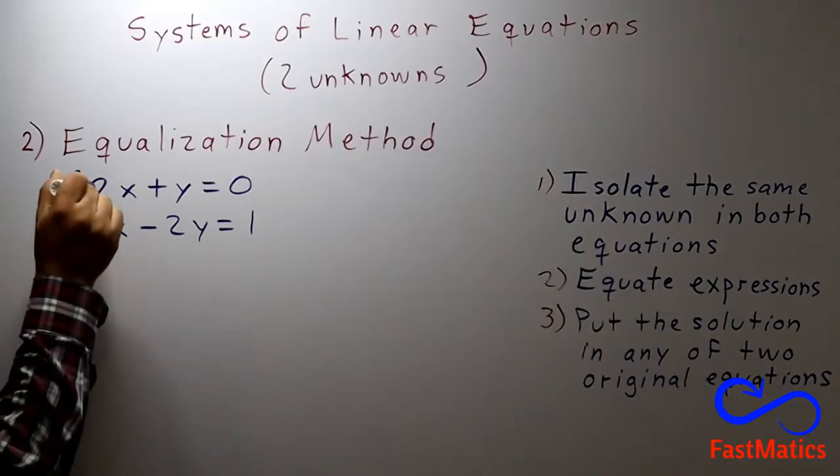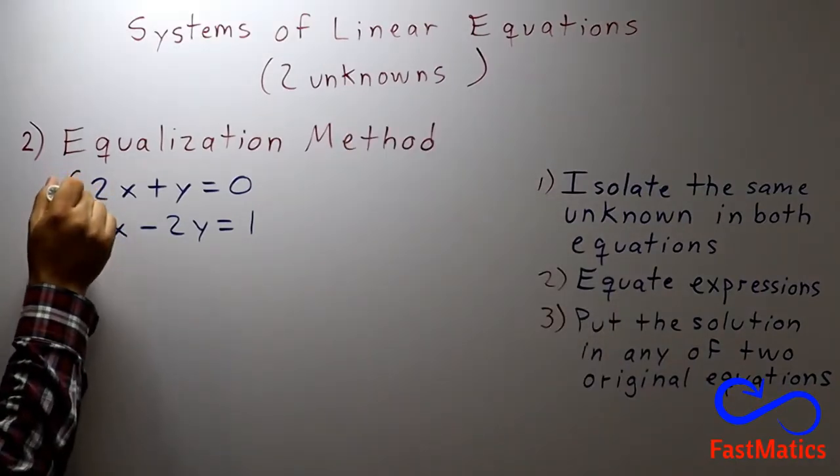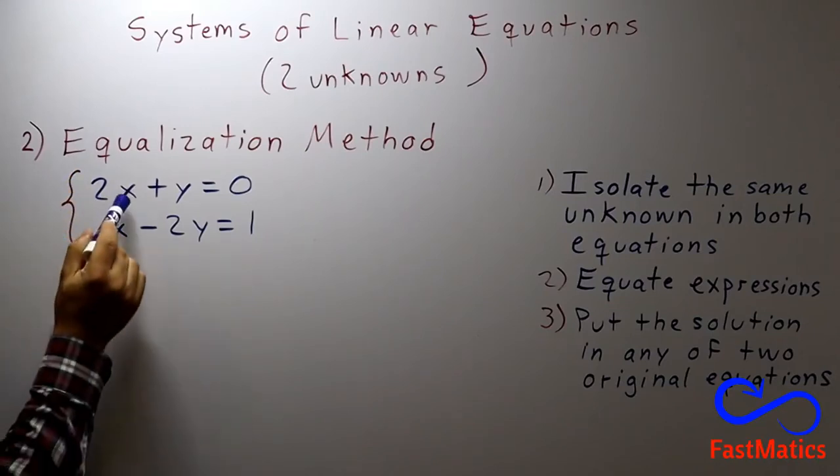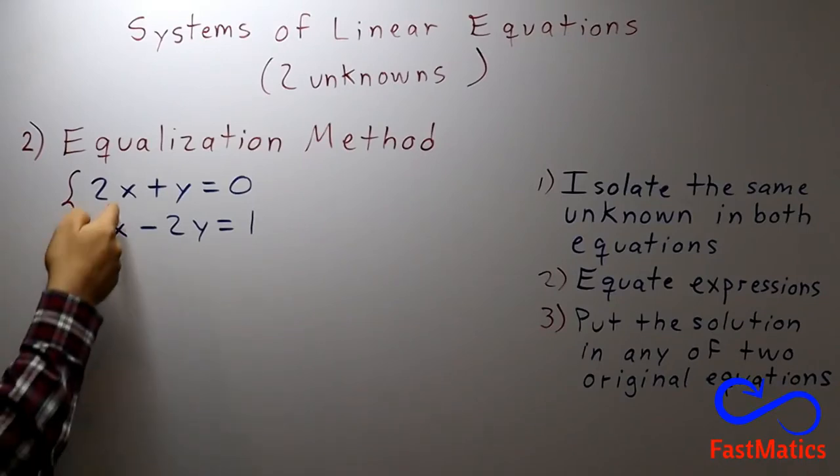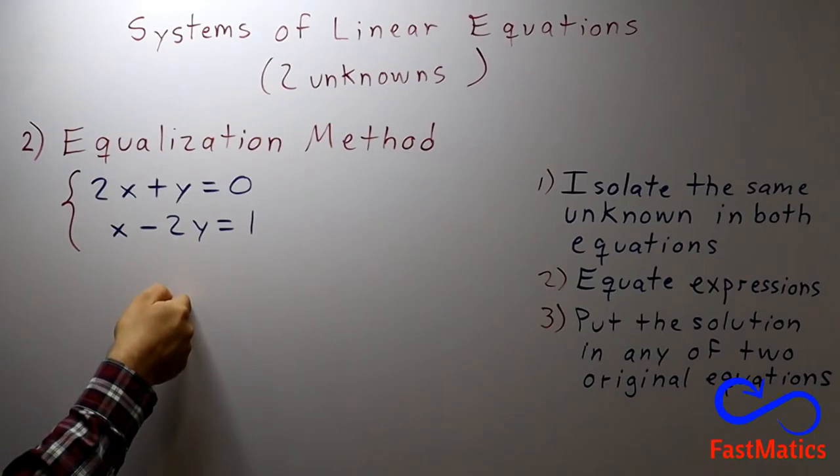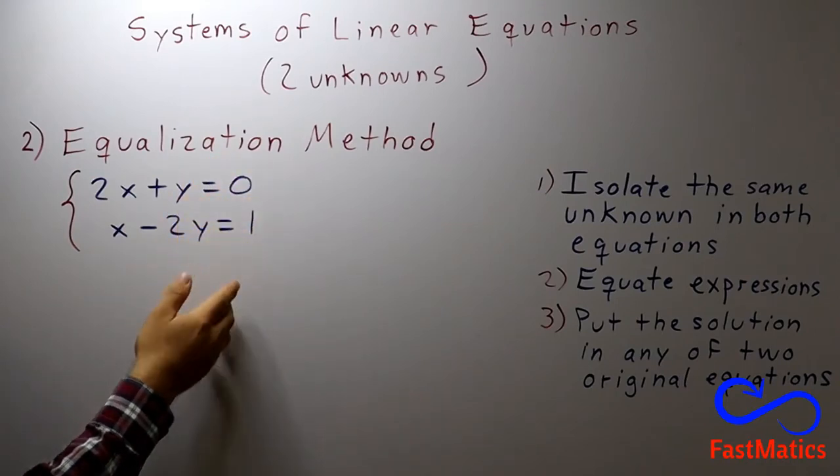First of all we see that we have a linear system of equations with two unknowns and we have to remember that it is very important to have x, y and the independent terms aligned.